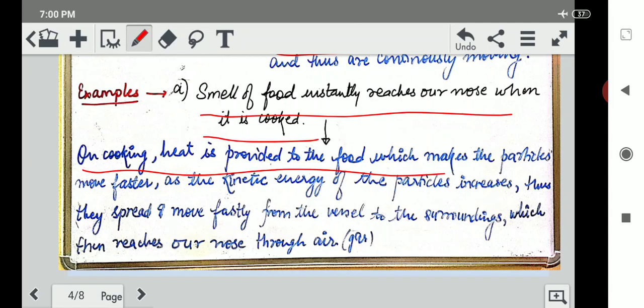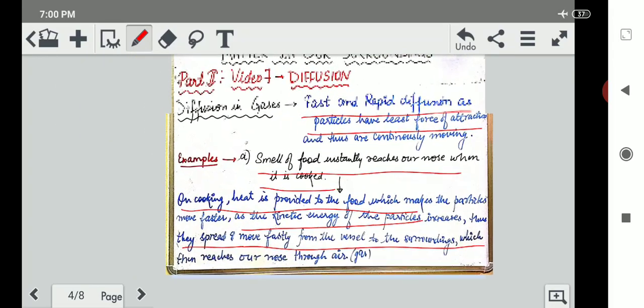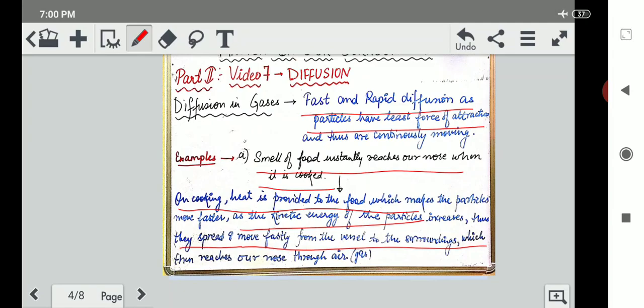Food ko heat diya, usse particles fata fata idhar udhar bhaagne lage. Jaisi kinetic energy particles ki increase hui, woh idhar udhar spread ho gaye. And they moved fastly from vessels to surroundings. Kinetic energy of the particles had increased, therefore it started moving here and there very rapidly. And thus from the vessel, that means from that utensil into which your mother was cooking, the particles spread out into the air. Now air is common in your whole house, so wherever the spread of that air will go, there that fragrance will spread. So now clear that how is smell of food instantly reaching our nose when it is cooked.